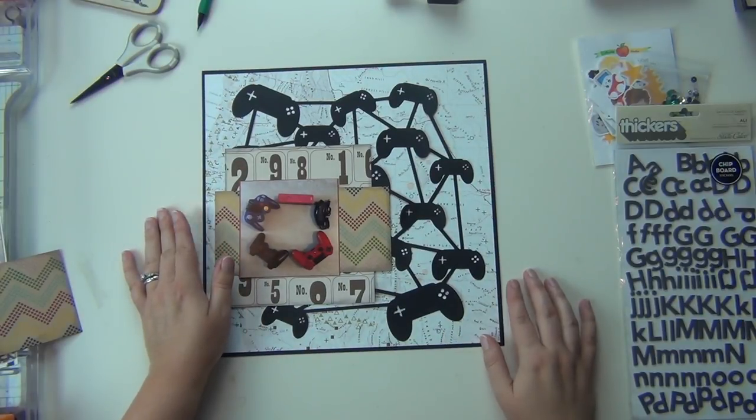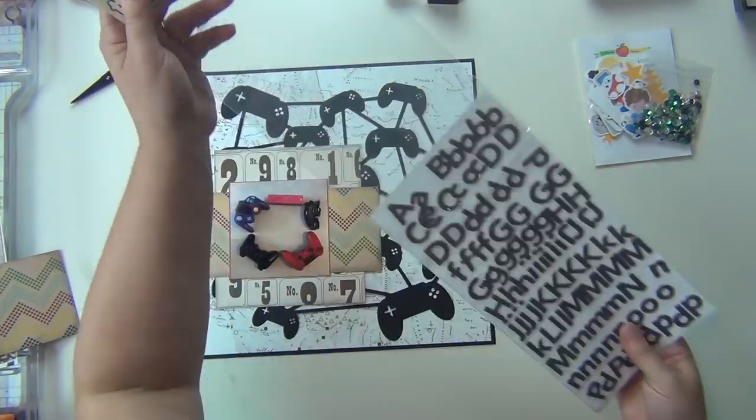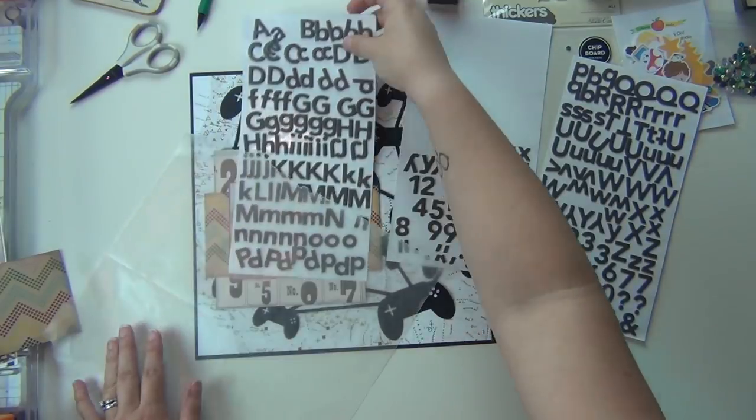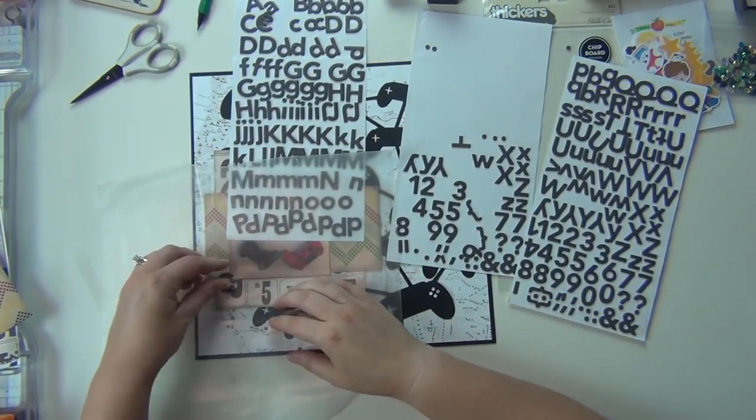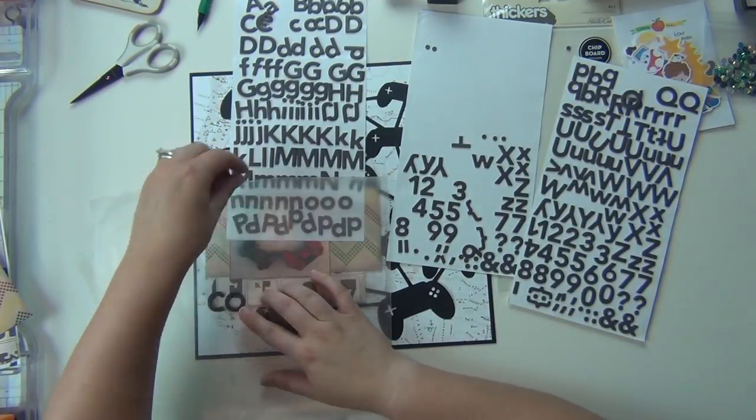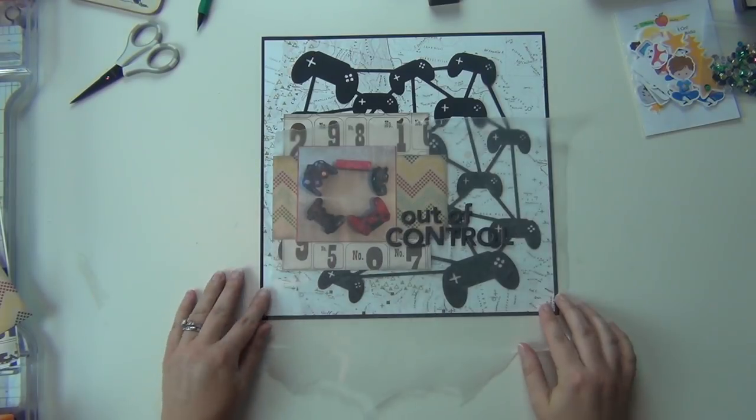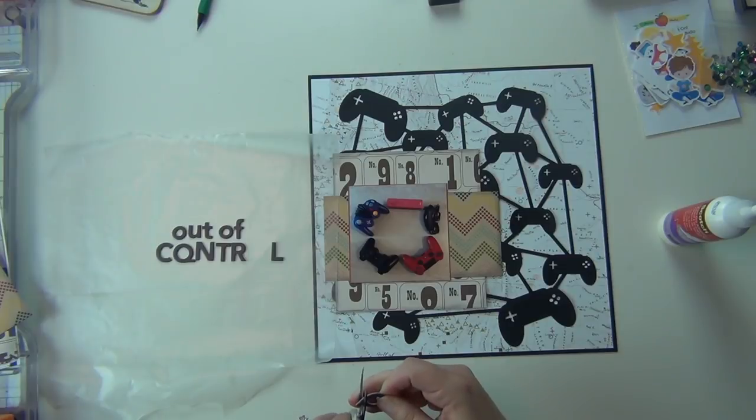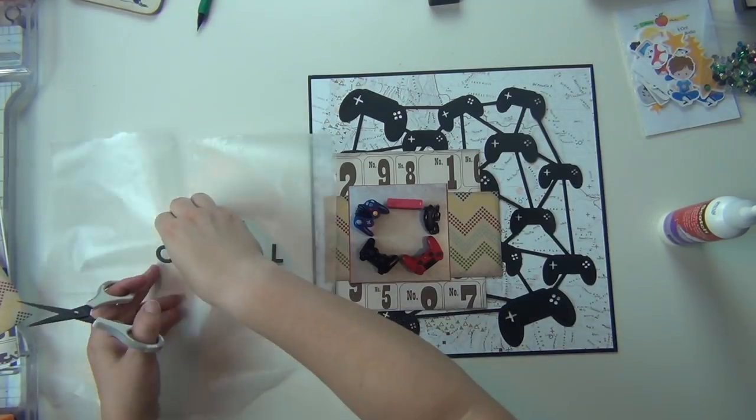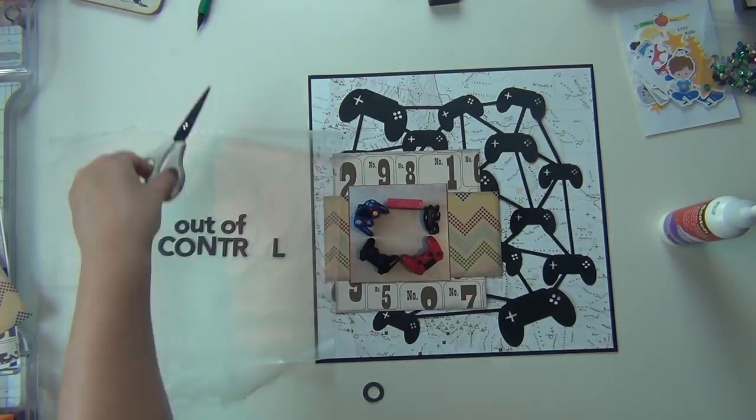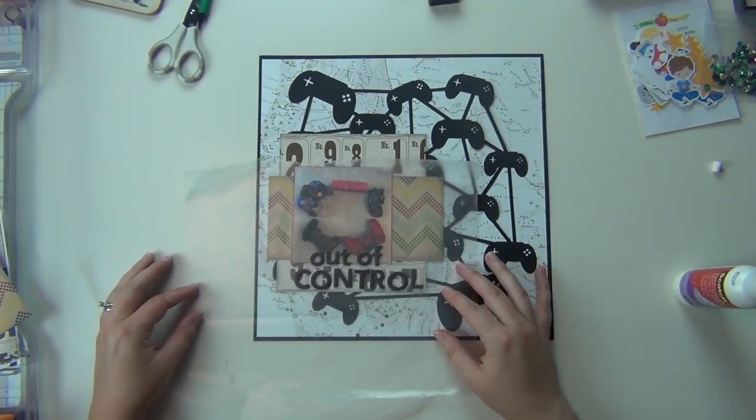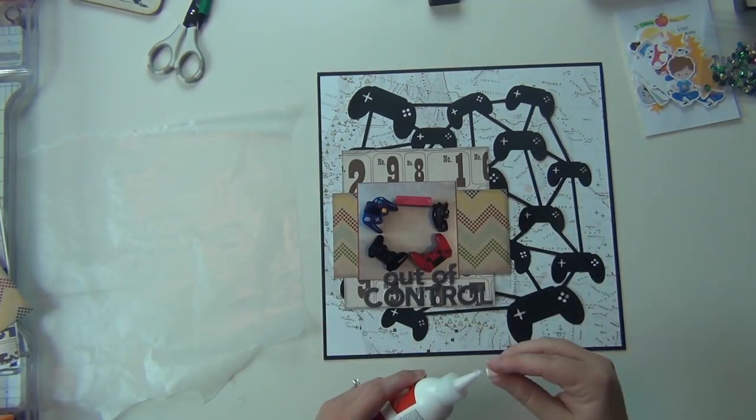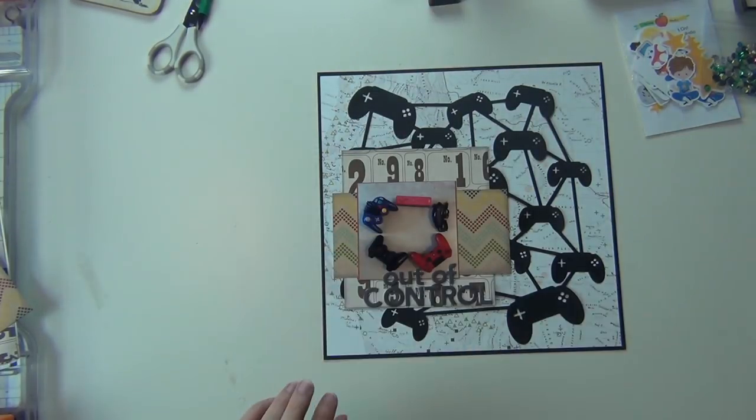Now I am thinking about my title and I want my title to be 'out of control.' It's a little funny play because there's a lot of controllers in that picture, you know, control, get a little out of control with the controllers. I'm going to use these stickers here, I think the font is called Allie, and I didn't have any O's so I'm just going to use a Q and cut off the little curly Q. I spelled control in capitals and then I did out of in lowercase. I really like that.